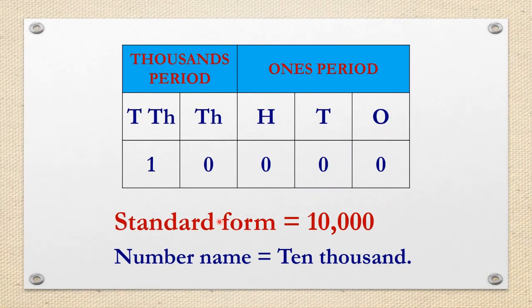Now let us see how this number is placed. A 5-digit number is placed in two periods: 1s period and 1000s period. The 1s period has 3 places: 1s, 10s and 100s. The thousands period has two places: thousands and ten thousands. These two periods are separated by a comma. When we write the number in standard form, the number ten thousand is written as 10,000. Its number name is ten thousand.